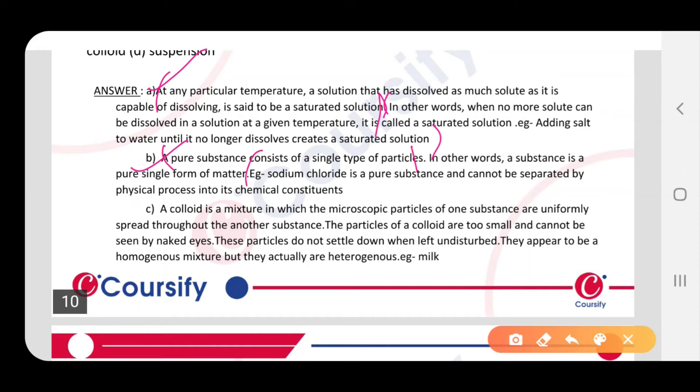Sodium chloride is a pure substance and cannot be separated by physical processes into its chemical constituents. Sodium chloride mein, sab mein NaCl, NaCl hi mile ga, aap aur dusre constituents nahhi mile ga. Toh is liye ye pure hai, kyunki is mein aur dusra koji particle nahhi hai.